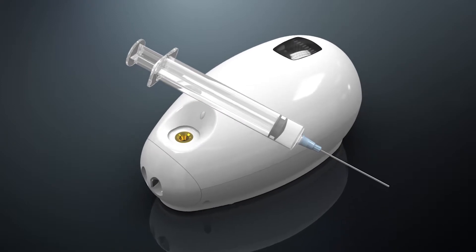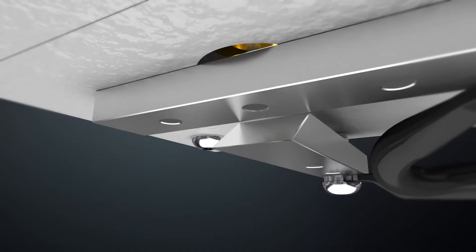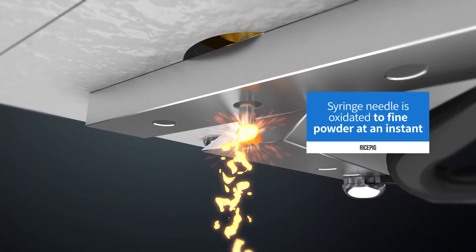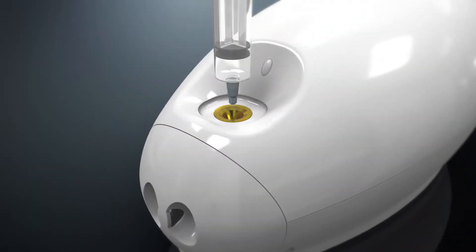A syringe needle used on a patient is blasted with resistor heat of arc plasma with temperatures of up to 15,000 degrees Celsius generated by electricity and the syringe needle is oxidated to fine powder at an instant.